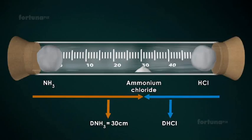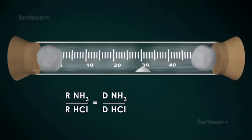While Hydrogen Chloride will travel a shorter distance, 20cm. The diffusion rates of each gas will be the distance traveled by each gas. So, 30 divided by 20 equals 1.5.